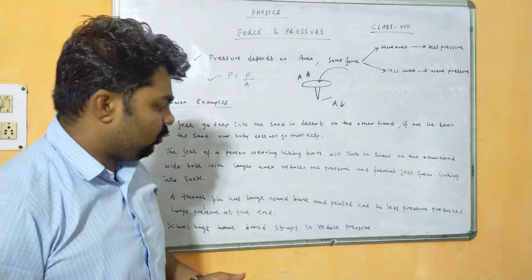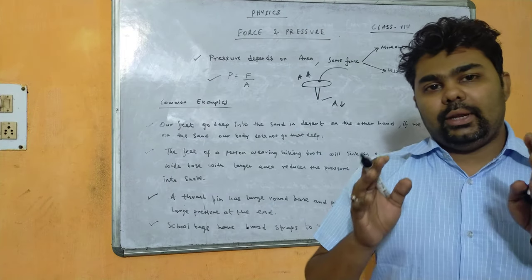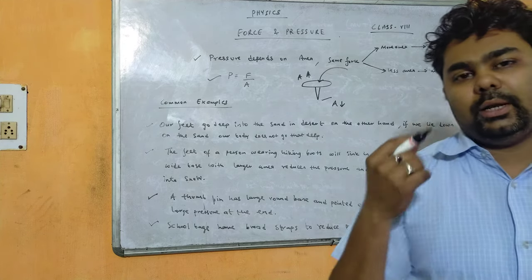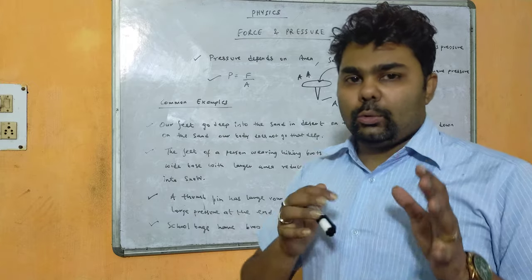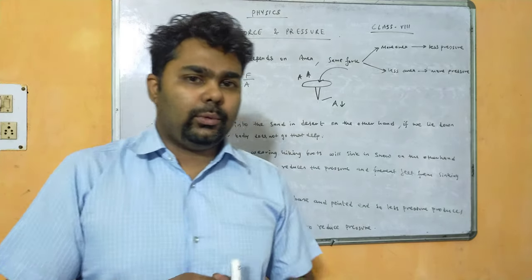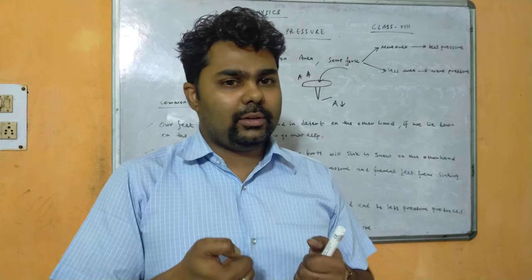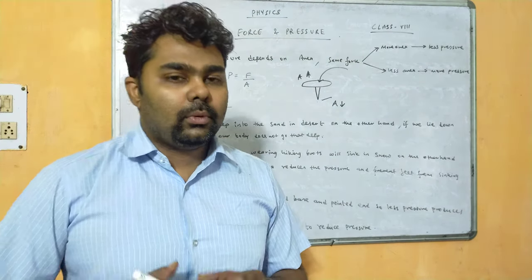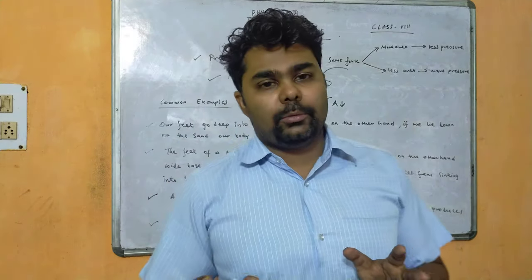School bags should have broad straps to reduce pressure on your shoulder. If the straps are very thin, they exert huge pressure on the shoulder. Similarly, if a shopping bag handle is very thin, it will hurt your hands by exerting large pressure. Broad straps distribute the force over a larger area, reducing pressure.